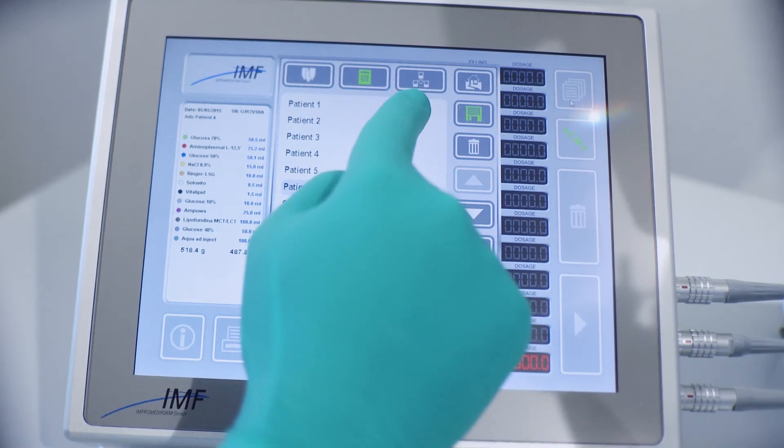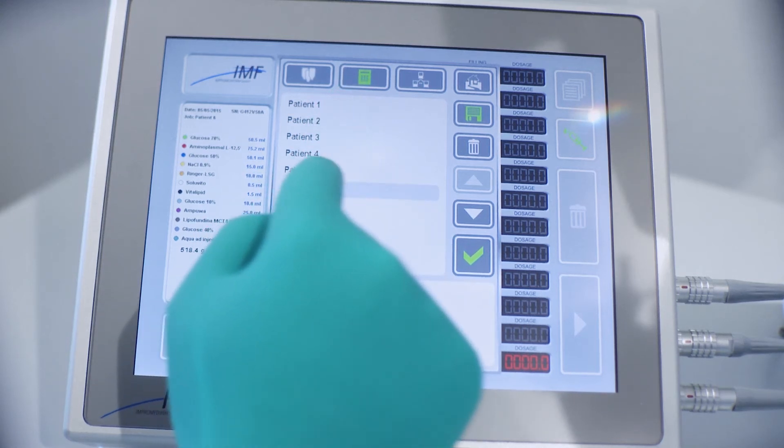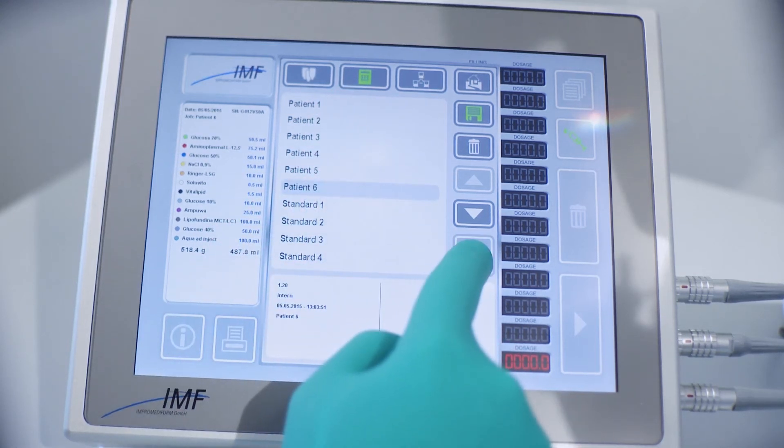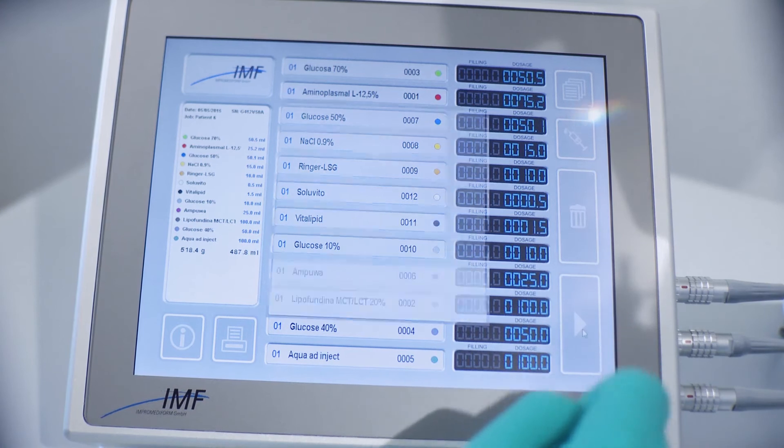One for the external jobs, for the formulations coming from an order entry software, and one for the internal jobs, standard formulations entered directly from the touch screen of the Medimix multi and saved for future use. Select the right formulation and press next. The volumes of each ingredient will be displayed on the main part of the screen and on the left side, as well as any possible manual additions.